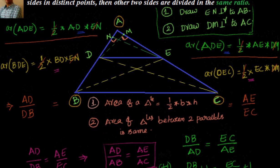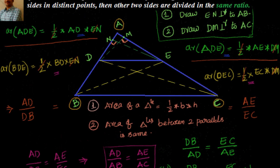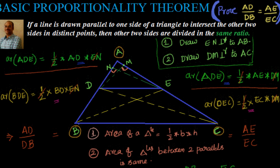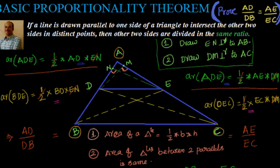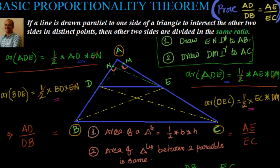So AD by DB equal to AE by EC is equivalent to saying AD by AB equals AE by AC. Leveraging this basic proportionality theorem, we can go ahead with similarity criteria like SSS, AAA, and SAS. The theorem states: if DE is parallel to BC, then AD by DB equals AE by EC. The converse — if AD by DB equals AE by EC, then DE is parallel to BC — will be seen in the next video.